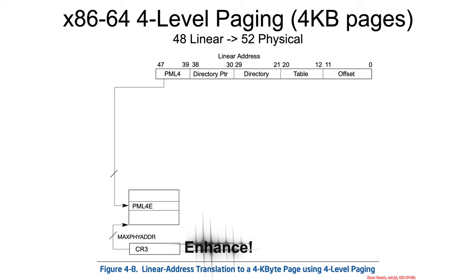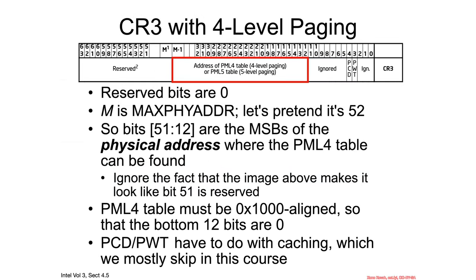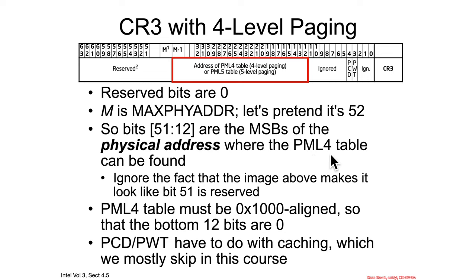We have to start with CR3, because that has a particular structure that will be inside the register. If you see anything listed as reserved, you should assume that's 0. M, in this bit field, is indicating the max physical address. I'm going to pretend it's 52, even though on my particular system it's actually 39 — so on my system this would be 38 to 39. But let's pretend it's 52 for maximum support. If it was 52, then bits 51 through 12 are the most significant bits of the physical address where the page map level 4 table can be found. Just ignore the fact that this would look like reserved — you just have to slide it up and then it wouldn't be reserved anymore.